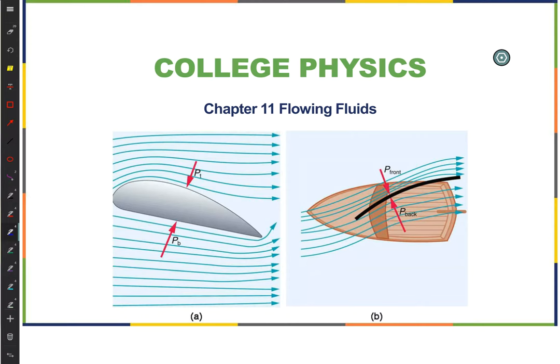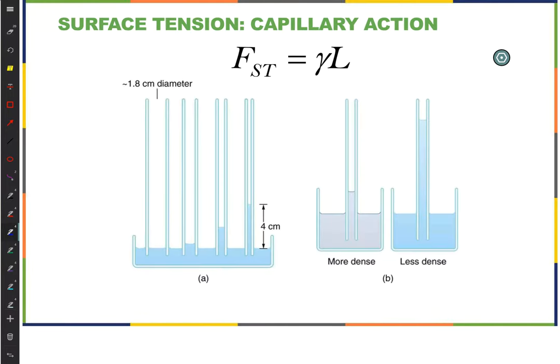We're going to be talking about flowing fluids today as contrasted to the static fluids we've been studying previously. I want to start where we left off last class period with the idea of capillarity. Capillary action is caused by the surface tension, that is by the energy being lower when you have water touching glass than when you have water touching water. We talk about this with a parameter that we call the surface energy or surface tension gamma.